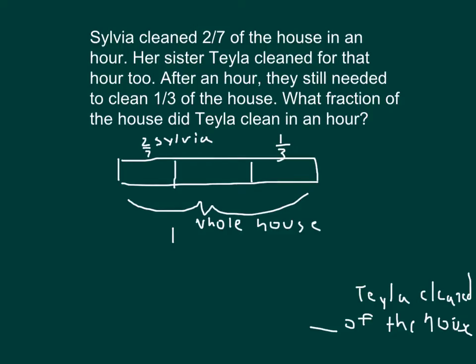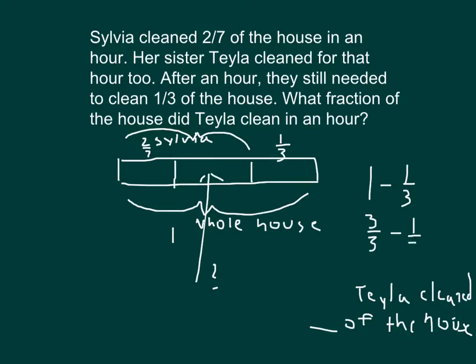This remaining amount is what Tayla had cleaned in that hour. We have one whole minus one-third, which gives the amount they had cleaned after an hour. Then we take away the two-sevenths that Sylvia had cleaned to get Tayla's amount. One equals three-thirds, so three-thirds minus one-third equals two-thirds. So we solve two-thirds minus two-sevenths.